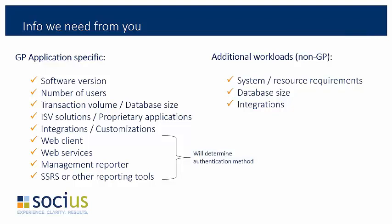Here is information we need from you for a successful GP migration to the cloud. We need to know what version of GP you're currently using — older versions aren't supported in Azure because of operating system and SQL Server requirements. For example, FRX is only supported on 32-bit servers, which are not available in Azure. If you are on a GP version prior to GP 2013 R2, an upgrade is required. We also need to know the number of users, transaction volume, and database size to determine the type and size of machines provisioned in Azure.